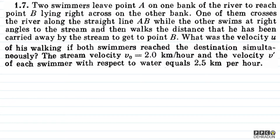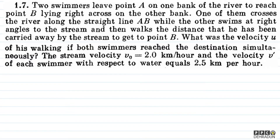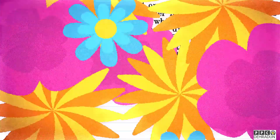Let's have a look at this beautiful problem of Irodov. The question is: two swimmers leave point A on one bank of the river to reach point B lying right across on the other bank. One of them crosses the river along the straight line AB, while the other swims at right angles to the stream and then walks the distance that he has been carried away by the stream to get to point B. What was the velocity U of his walking if both swimmers reached the destination simultaneously? The stream velocity V₀ equals 2 km/h and the velocity V' of each swimmer with respect to water equals 2.5 km/h.